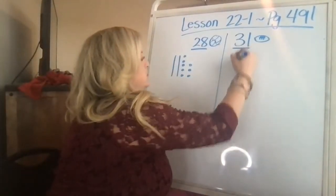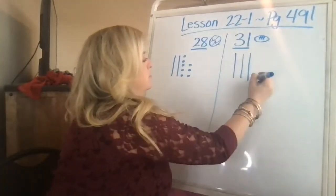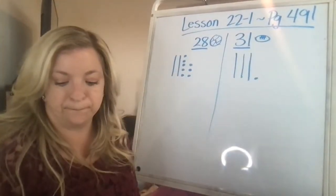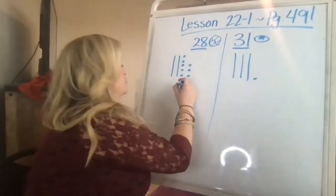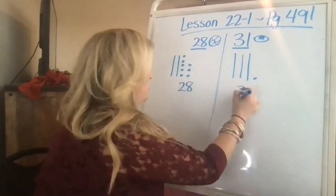Now I'm going to do 31, 10, 20, 30, 31. So there are 28 down here and 31 here.